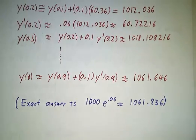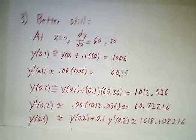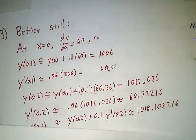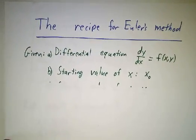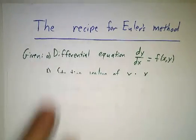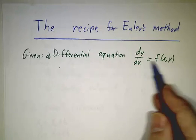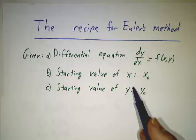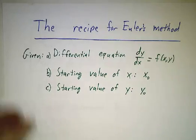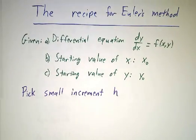So the idea of Euler's method is that we go in steps. You have a differential equation, not just dy/dx equals 0.06y, but somebody gives you a differential equation, and they give you a starting value of x and a starting value of y. Then we're going to go in small steps, and you get to pick how small a step you want. The smaller the step, the better the approximation.